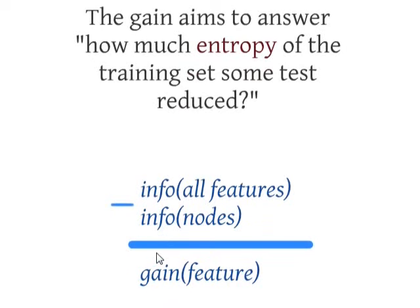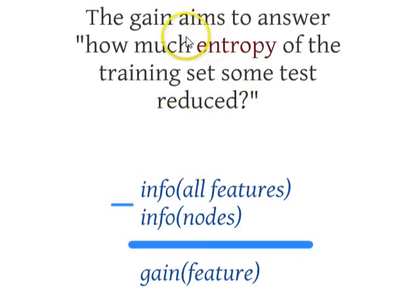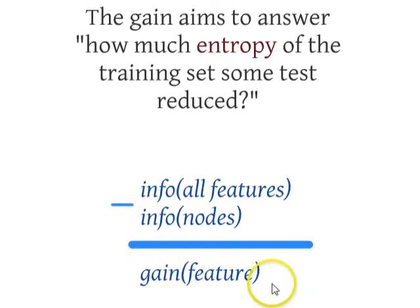We also have a measure called gain, which answers this question: how much does this test on the training set reduce the entropy? The Decision Tree algorithm goes through features one by one, and finds how much entropy a test using that feature reduces. The gain is calculated as the information value for all features minus the information value for the resulting nodes.